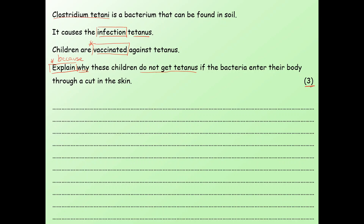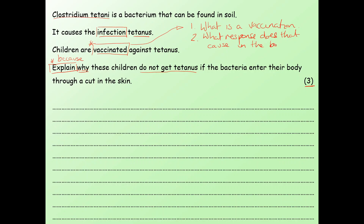So let's have a little look at how we'd approach this answer. It's worth three marks. Ideally the first thing you'd want to do is explain what vaccinations are — show them that you know what that word means. Then, what response does that cause in the body? And then the final mark would be your explanation of how this stops them getting tetanus — how does it prevent tetanus? I'd like you to pause the video now and have a go at answering that.